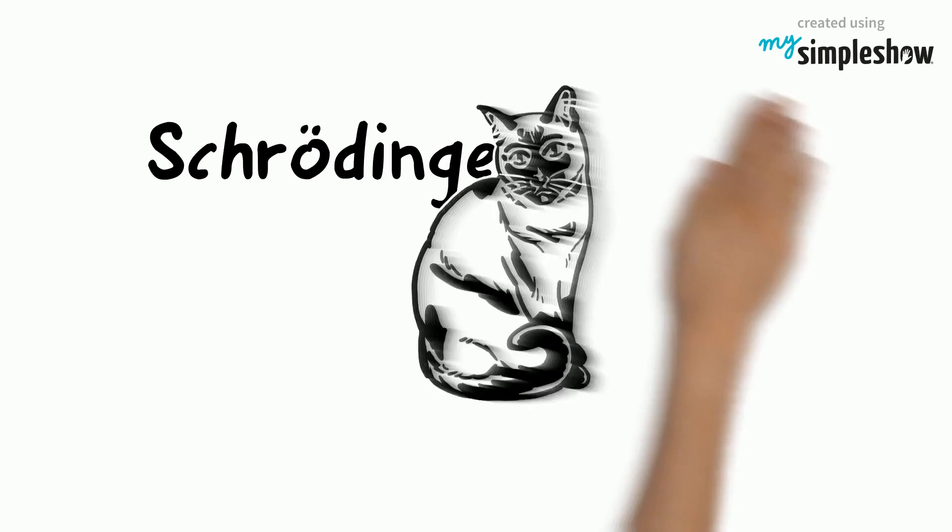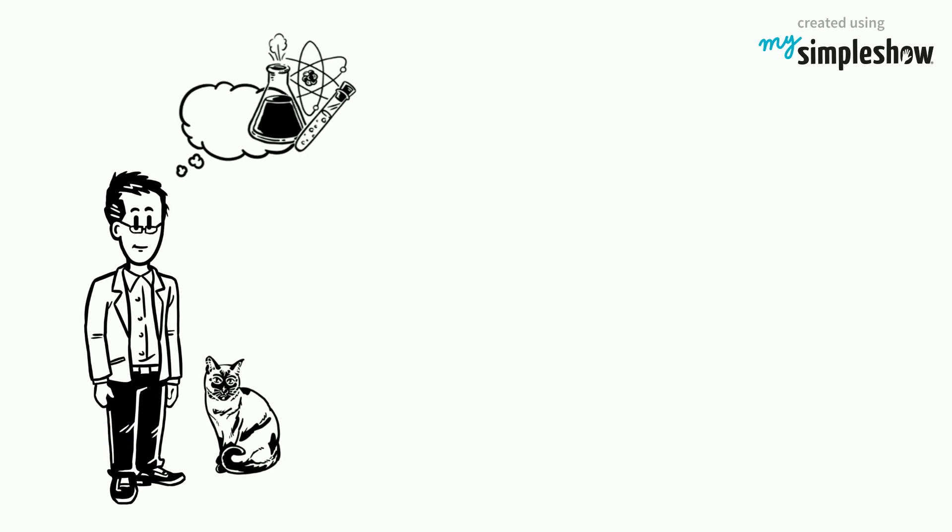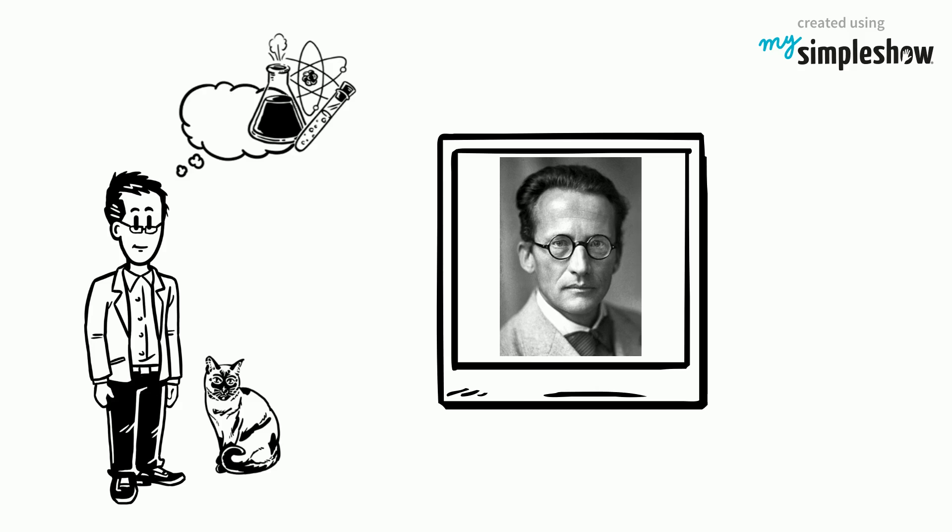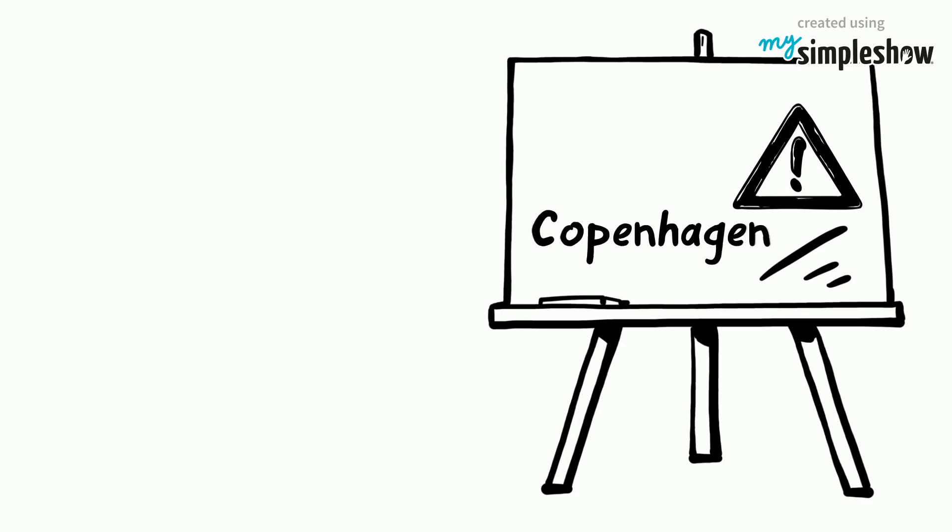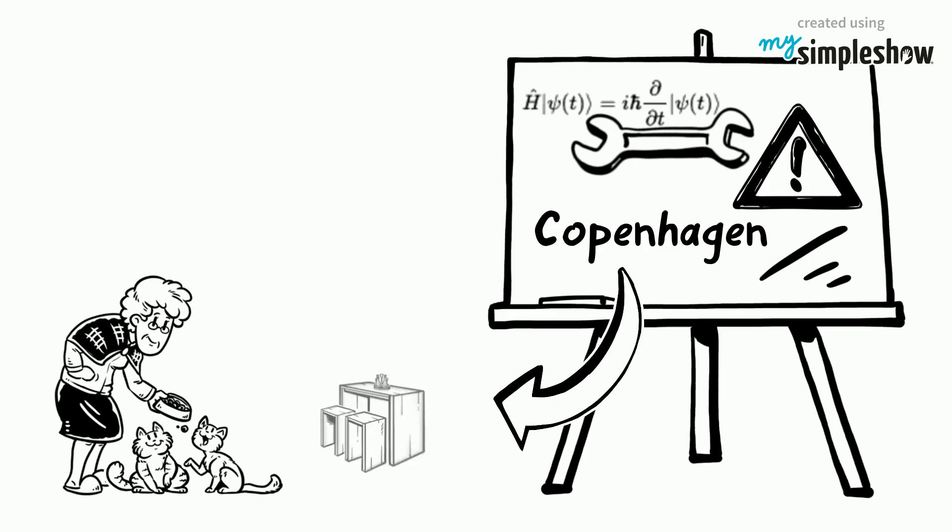We explain the Schrödinger's cat experiment. Schrödinger's cat is a thought experiment devised by Austrian physicist Erwin Schrödinger in 1935. It illustrates what he saw as the problem of the Copenhagen interpretation of quantum mechanics as applied to everyday objects.